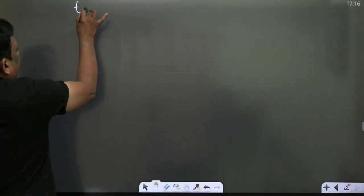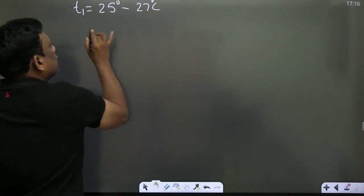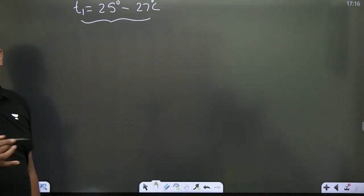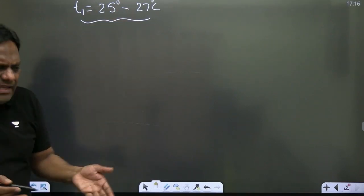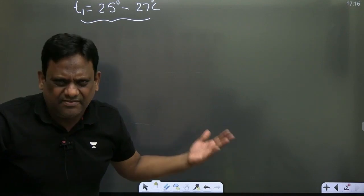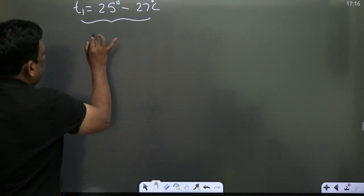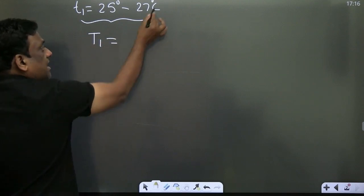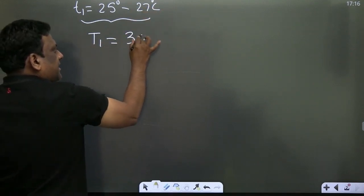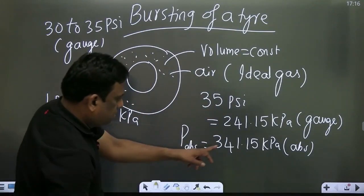Let the initial temperature be 27 degrees centigrade. The room atmospheric temperature, let it be 27 degrees centigrade. The initial temperature in Kelvin is 300 Kelvin and the initial pressure of air is 341.15 kilopascal.